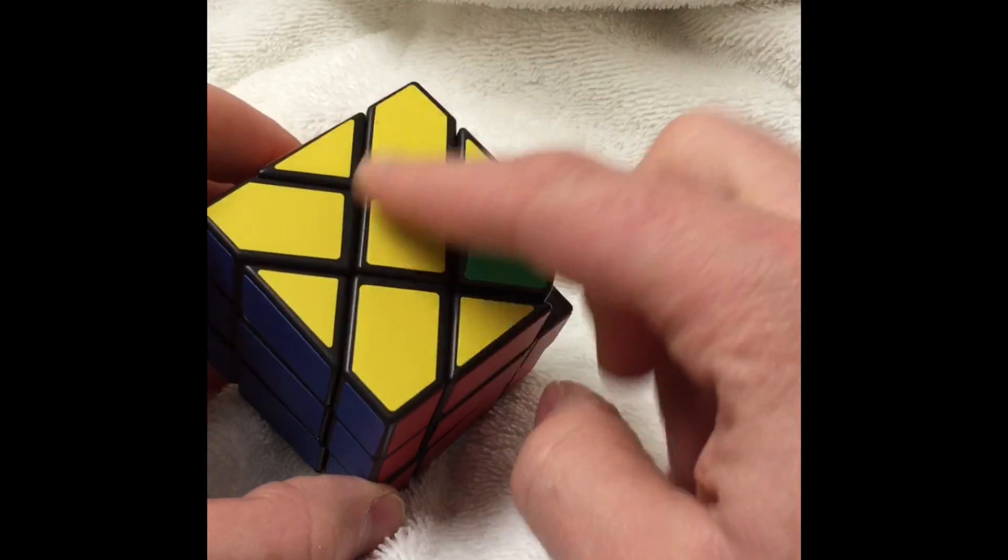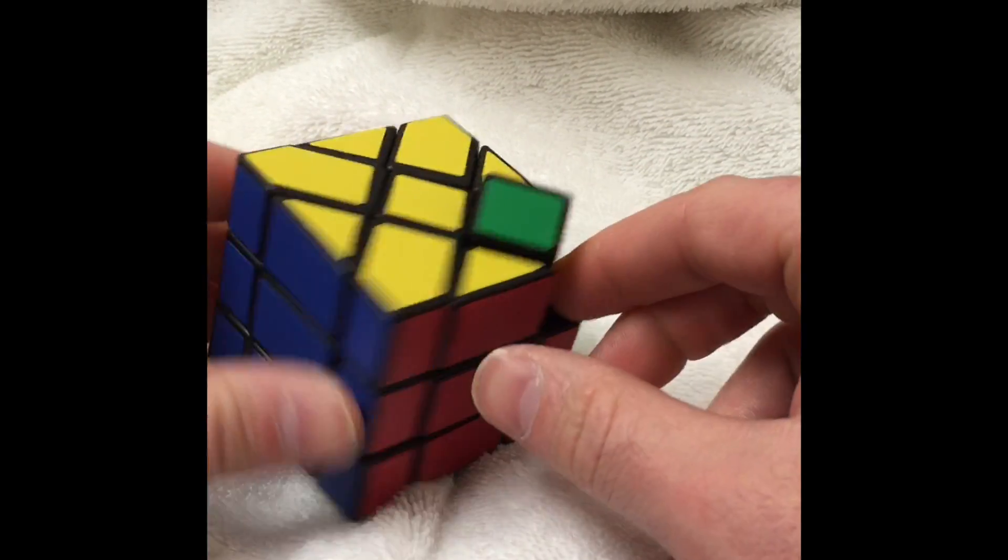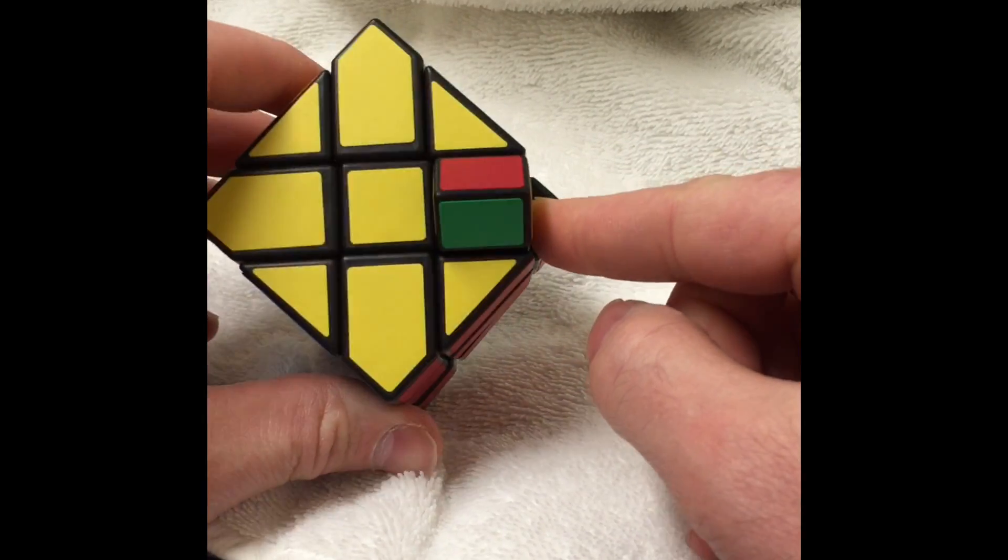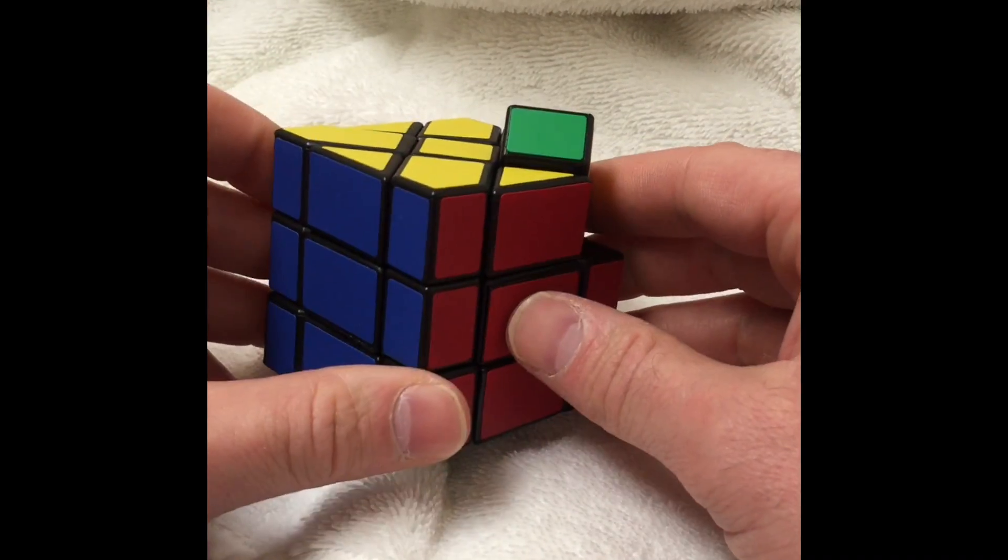So let's say you want to get your plus sign, right, but you can't do it, and you said, oh, I'll solve the rest of the cube, and you got this. So what you do is you hold your parity piece on the right side, okay, and you do as follows.